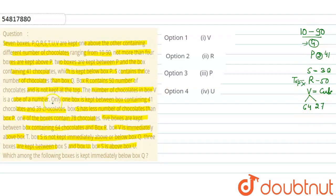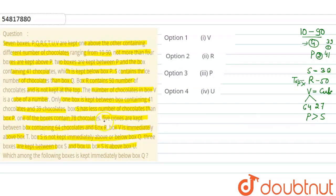Only one box is kept between the boxes containing 41 and 39 chocolates. Box S has fewer chocolates than box P, meaning P has more chocolates than S. One box contains 78 chocolates. And 5 boxes are kept between the box containing 64 chocolates and box R. Box V is immediately above box T. Box S is not kept immediately above or below box Q. 3 boxes are kept between box S and box U, and box S is above box U.